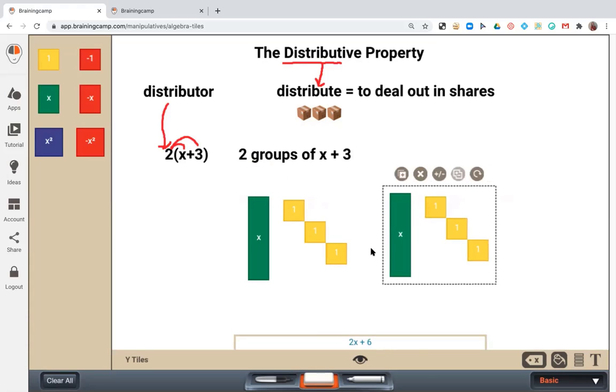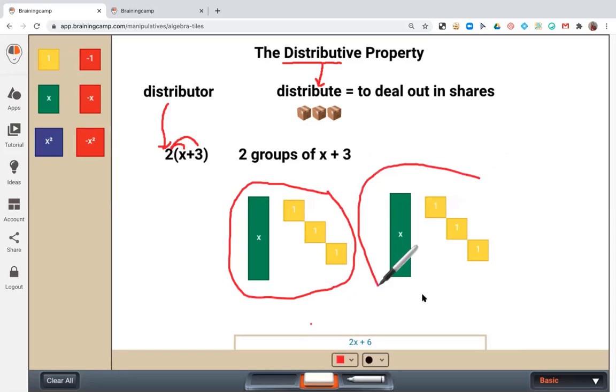So now we can see we have one group, and then we have another group over here. How does this look algebraically? Well, when we distribute that 2 to what's inside the parentheses, I want two groups of x, or 2 times x, plus two groups of 3, or 2 times 3.